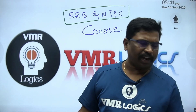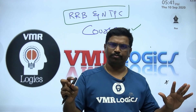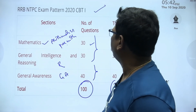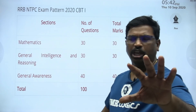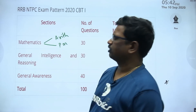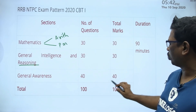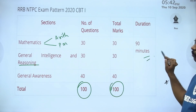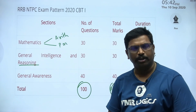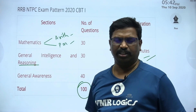We will discuss about the faculties and fee structure. First, let's look at the syllabus. In Mathematics there are two parts: Arithmetic and Pure Maths — 30 questions, 30 marks. Next, Reasoning — 30 questions, 30 marks. General Awareness — 40 questions, 40 marks. Combined, that is the total marks and questions. This is the CBT1 examination pattern.